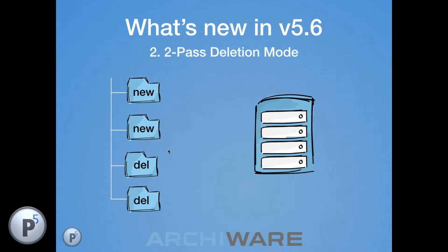Feature 2 is Two-Pass Delete Mode, designed to address an issue where P5 sync previously worked folder by folder — copying new files and later performing deletes. If the target storage is nearly full and new folders are large, there's a risk of filling up storage before deletions occur, since copying happens before deleting in the single-pass ordering.